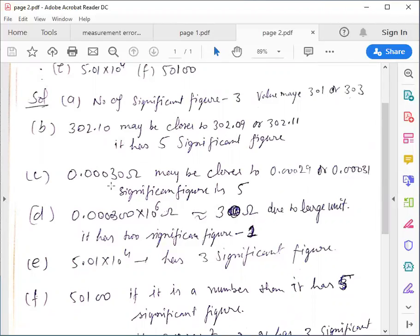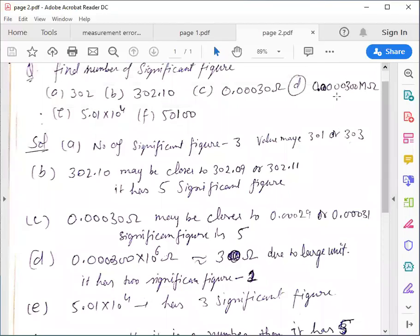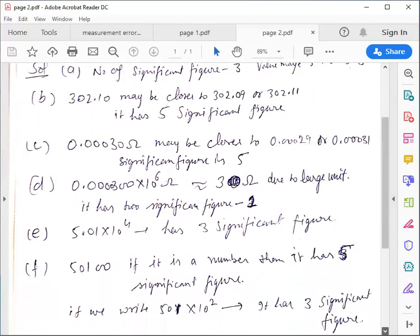Now question D, 0.0000300 mega ohm. Now we have to calculate significant figures. So mega ohm means 10^6. If we multiply this quantity with 10^6, we get 30 ohm.